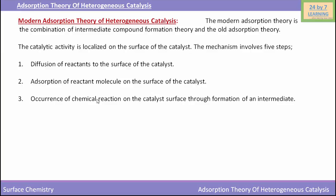The third step is the occurrence of a chemical reaction on the catalyst surface through the formation of an intermediate. These intermediates are reactive species like free radicals. In this step, adsorbed molecules get dissociated to form active species like free radicals, which react faster than the molecules. These are called intermediate molecules.